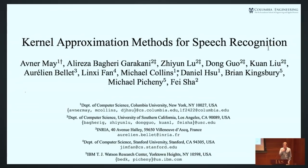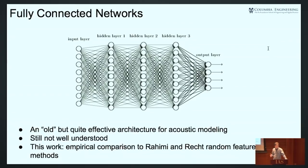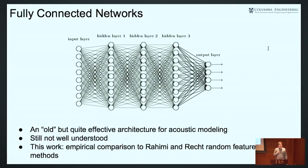This is joint work with Avner May, Fay Sha and collaborators at UCLA, and Brian Kingsbury and Michael Picheny at IBM. In this part I'll consider empirical results on fully connected networks — neural networks for speech with around 1,000 to 2,000 nodes per hidden layer, densely connected, typically three or four layers. This was really the architecture which made the initial splash in speech recognition, and it's an effective one, though I would argue it's still not well understood.